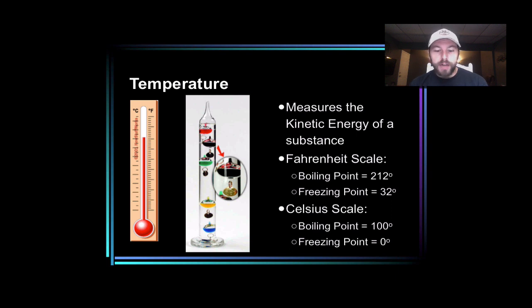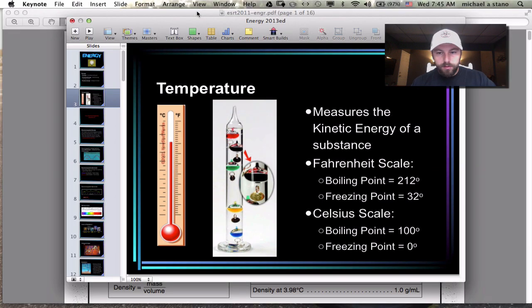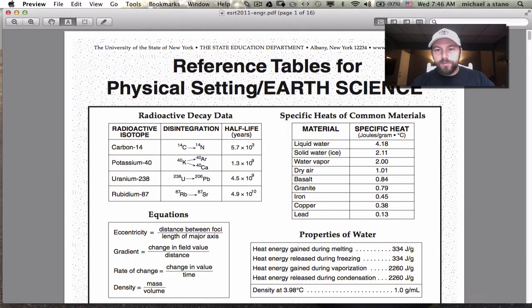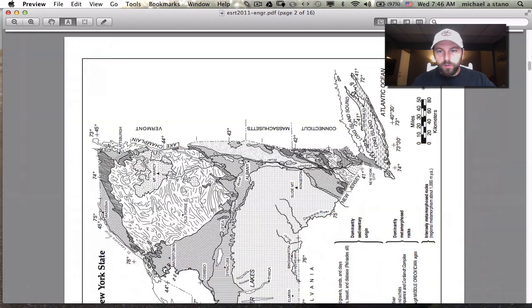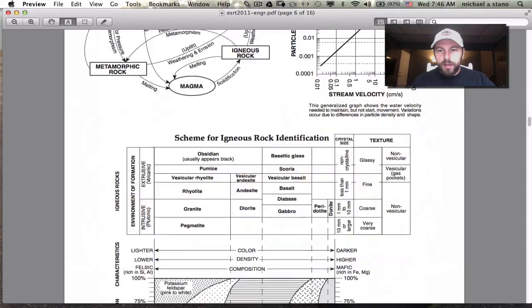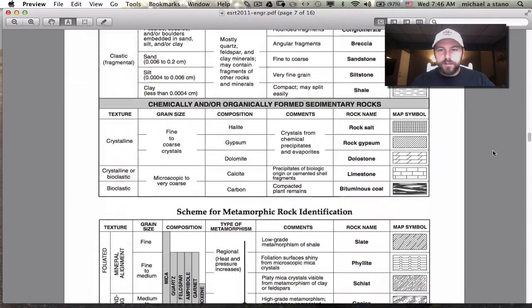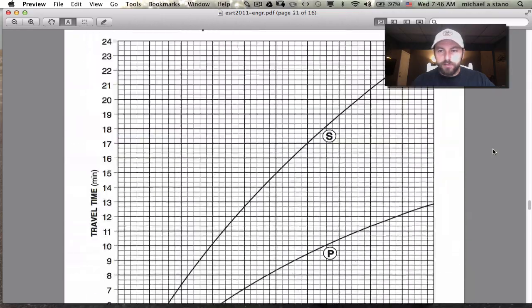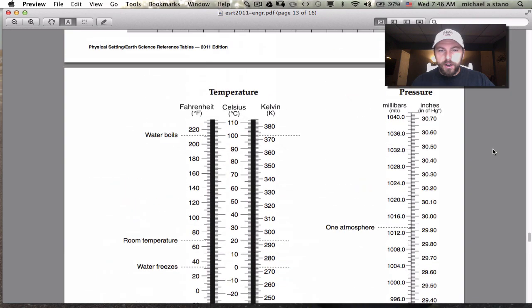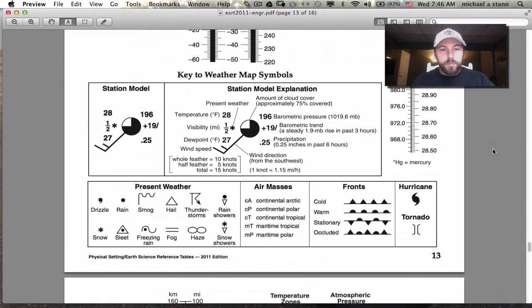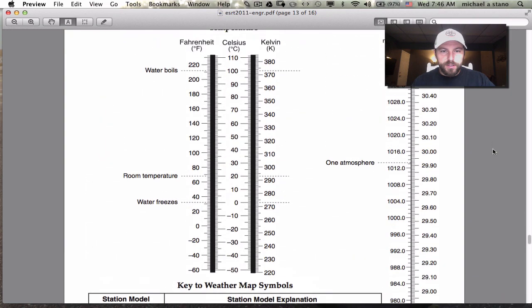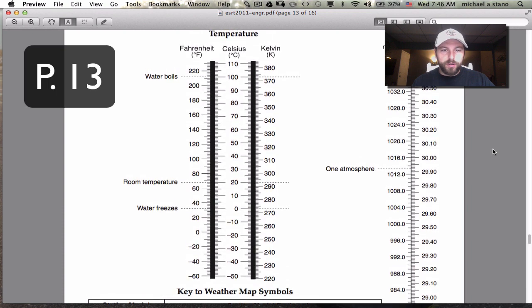All of these are actually in the Earth Science reference table. If we take a little switch over here into our reference table, going through. We can move through our reference table, and we can actually find the temperature scales that I'm talking about right here. So we're looking at page 13.